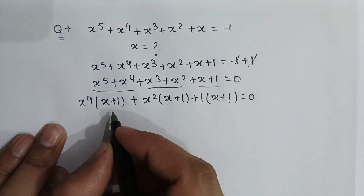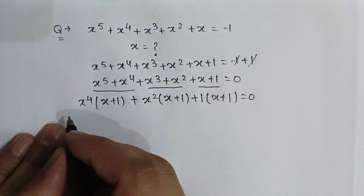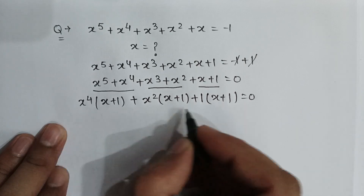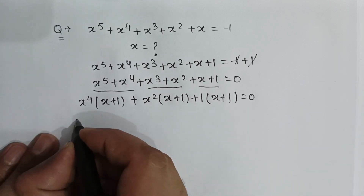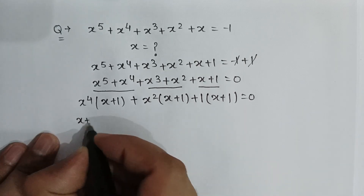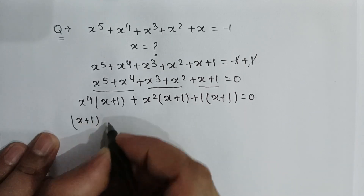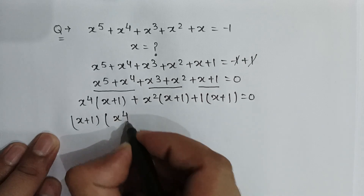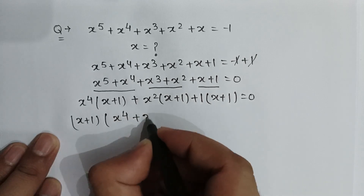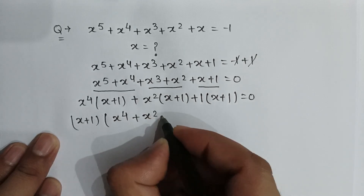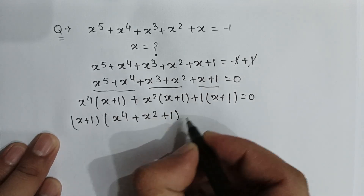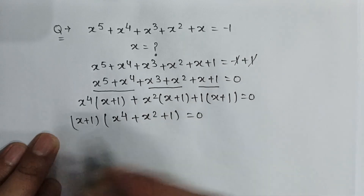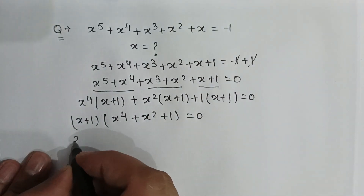If we take (x plus 1) common from all these terms, then it will be (x plus 1) multiplied by (x to the power 4 plus x squared plus 1) is equal to 0.